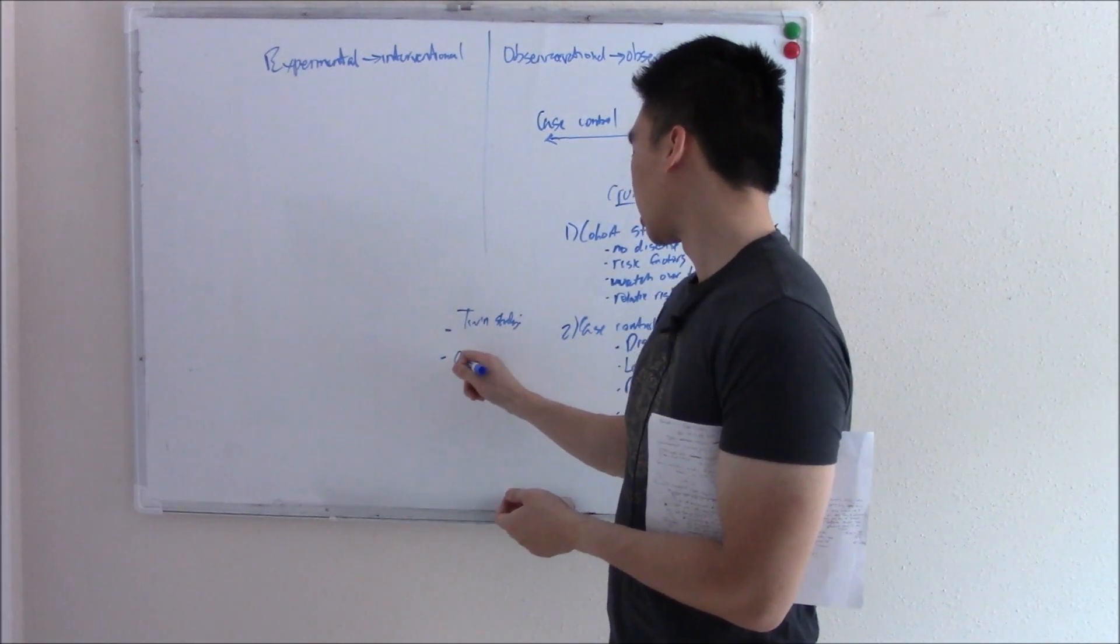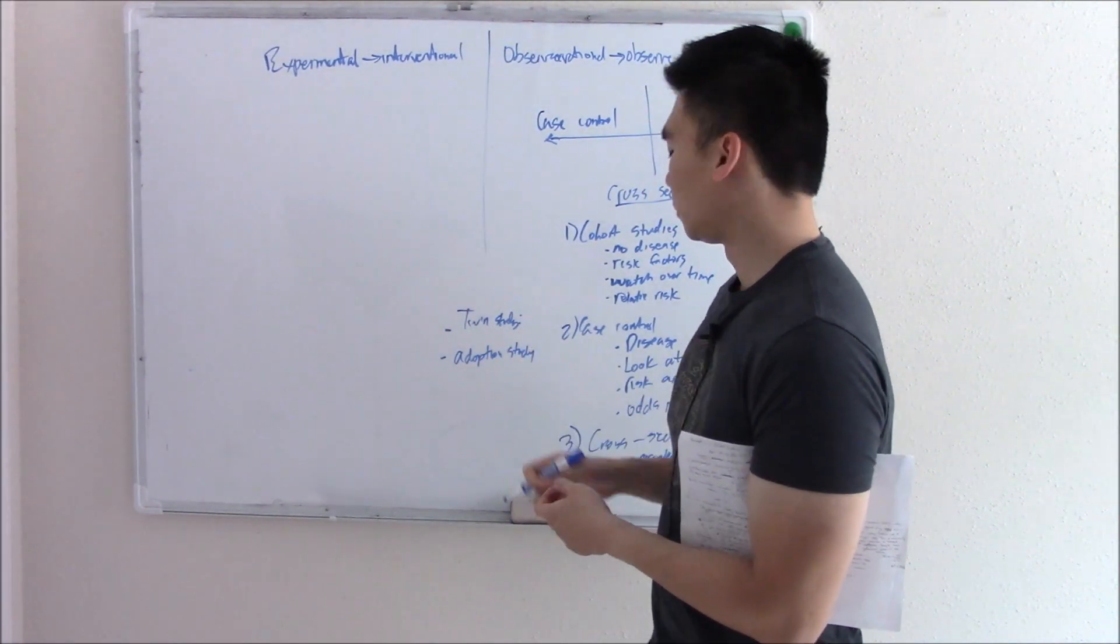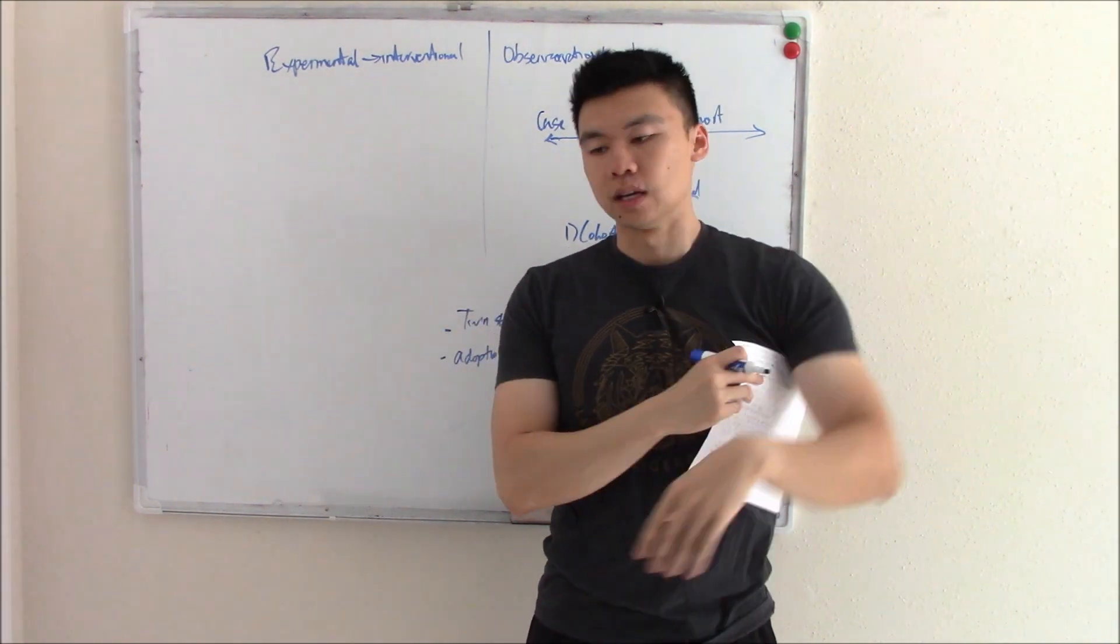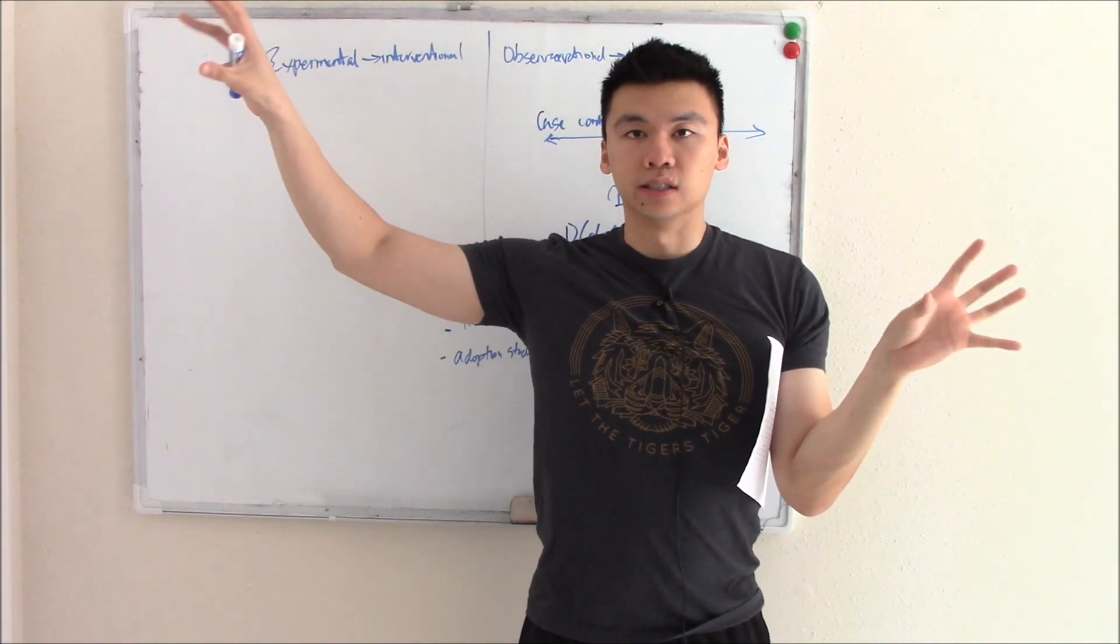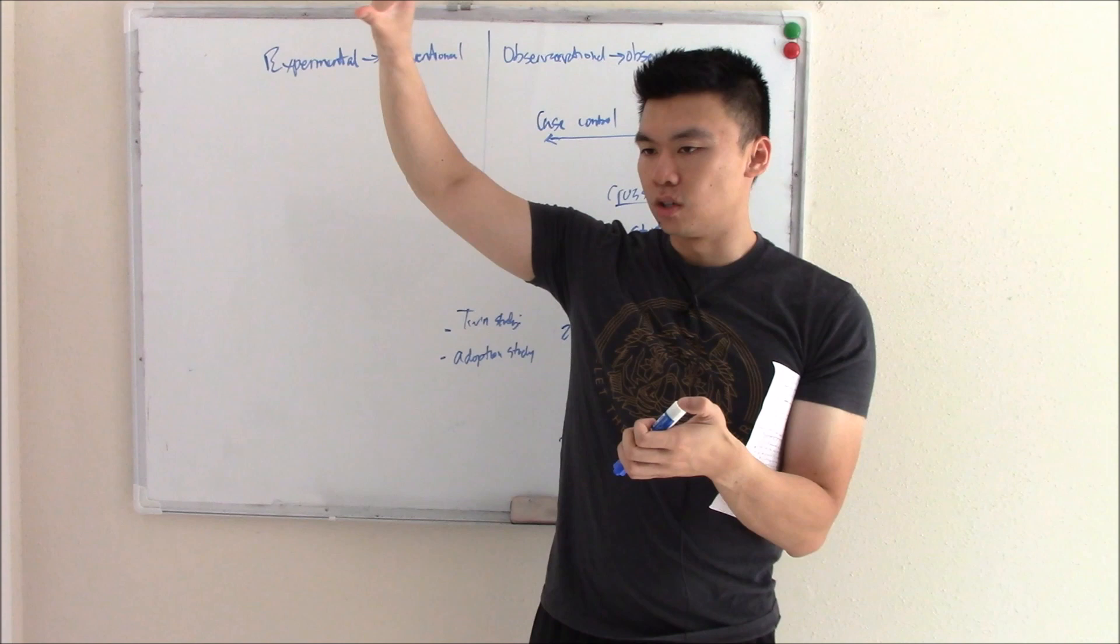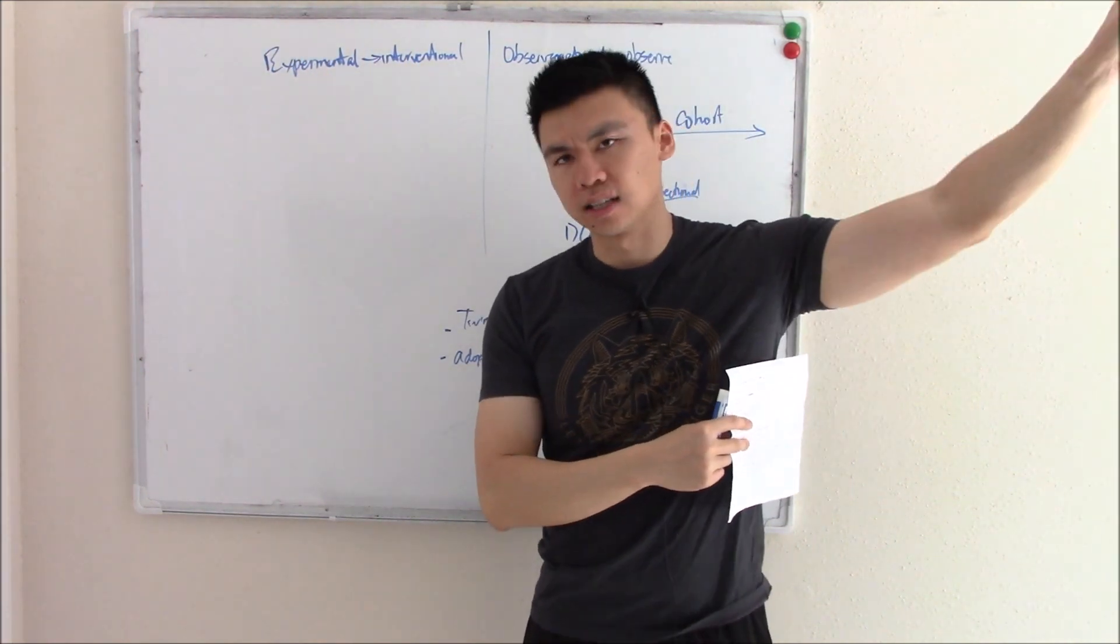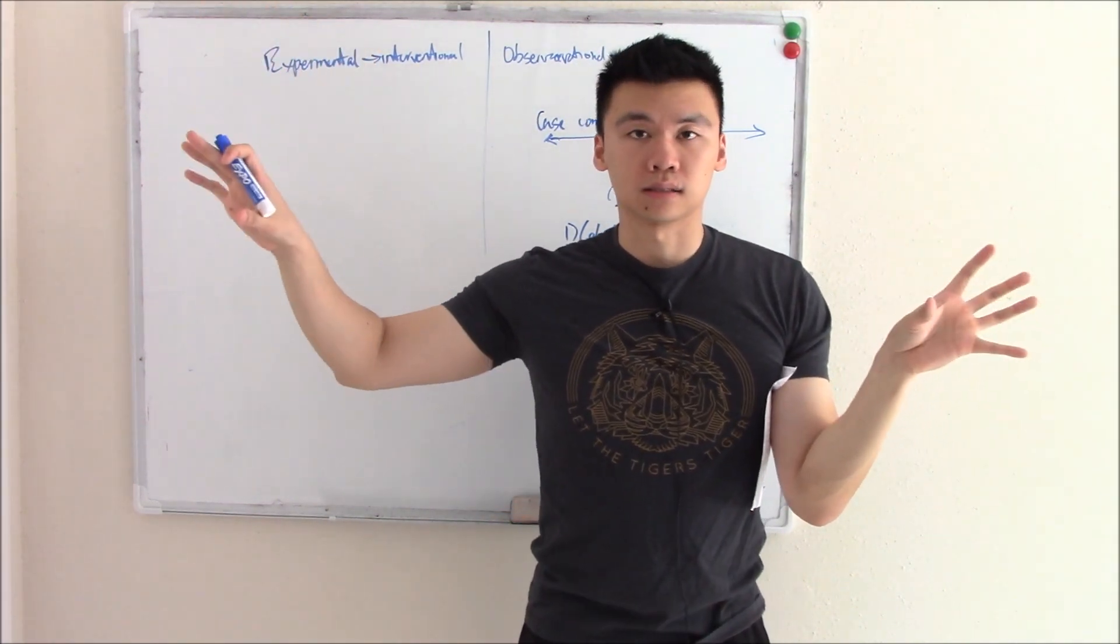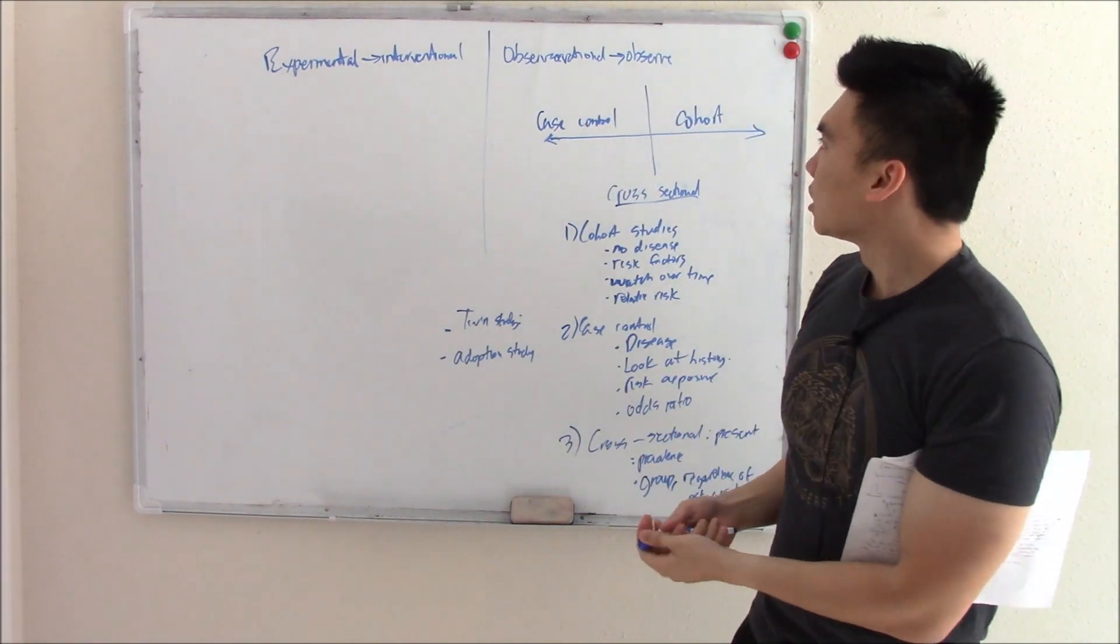Another one is called the adoption study, where one twin is adopted to one group of parents and then one twin adopted to another family. And then you can compare and contrast what are the disease prevalence of these two twins. And that kind of shows nature versus nurture. Maybe one family is really active and likes to work out, and then one family is sedentary, eats a bunch of junk. How does that affect disease processes? That is the adoption study.